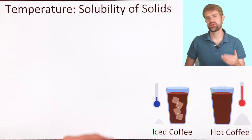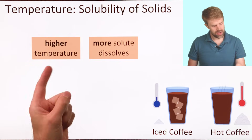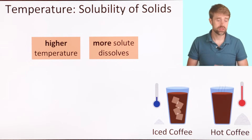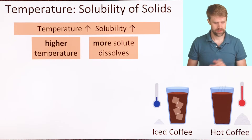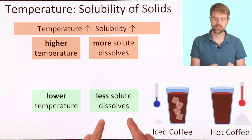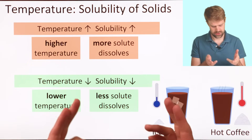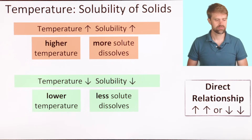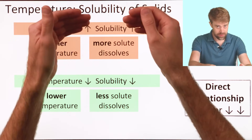What's true for sugar is true for most other solids as well. At higher temperatures, more solute can dissolve. This means that as temperature goes up, solubility goes up as well. And in the other direction — when we look at the cold iced coffee, at lower temperature, less solute can dissolve. So, as temperature goes down, solubility does as well. Here, solubility and temperature have a direct relationship — they move in the same direction. They both go up, or they both go down.